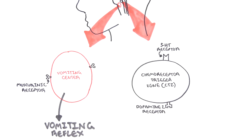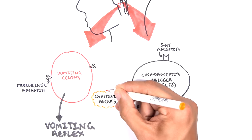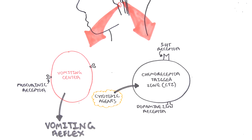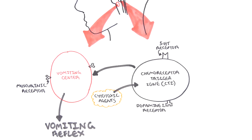It's easy to remember CTZ because we know that chemotherapy stimulates this chemoreceptor trigger zone. When the chemoreceptor trigger zone is stimulated, it will then stimulate the muscarinic receptors of the vomiting center. When the muscarinic receptors of the vomiting center are stimulated, this will cause the vomiting reflex, the emetic reflex.